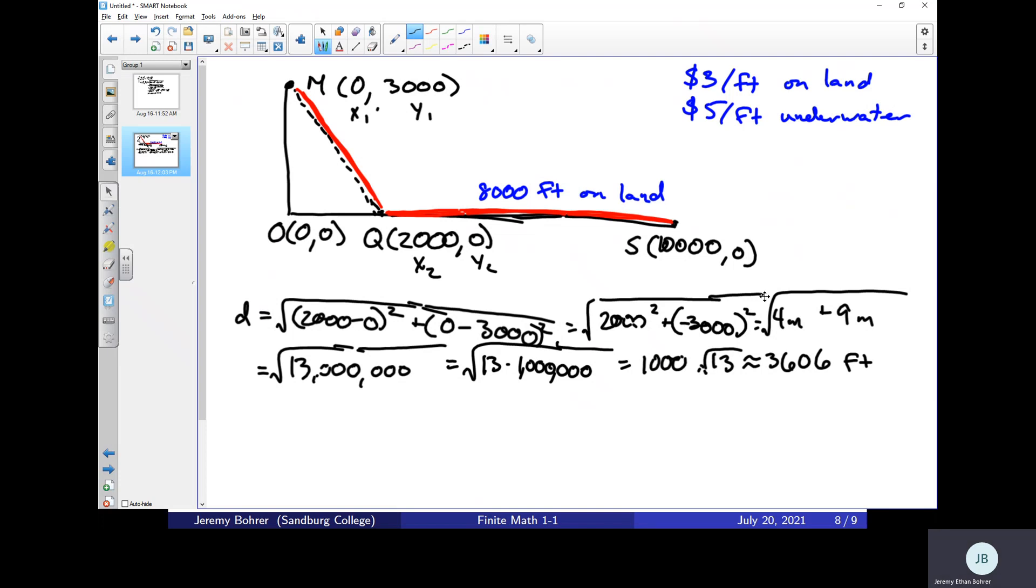Okay, well now we want to find the cost. We'll call that C. Cost is equal to the distance on land times three dollars. The distance on land is 8,000 feet, plus the distance underwater times five dollars. So that's five dollars times 3,606 feet.